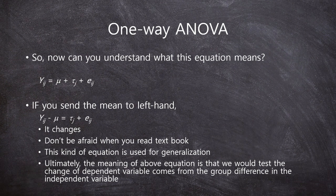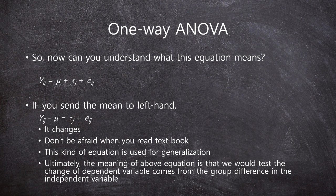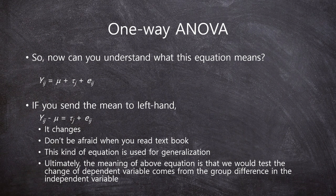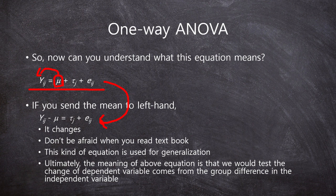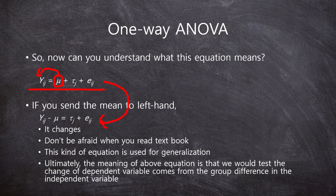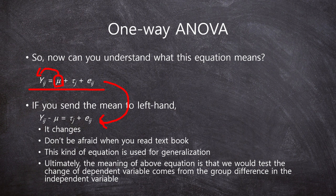So, now, can you understand what this equation means? Here, if we move the mu, the average mean, to the left side, this equation changes like this. So, don't be afraid when you read the textbook. This kind of equation is used for generalization. The scholars just want to describe all data in one equation.